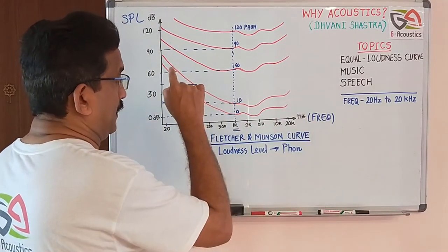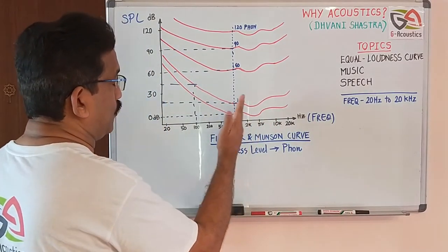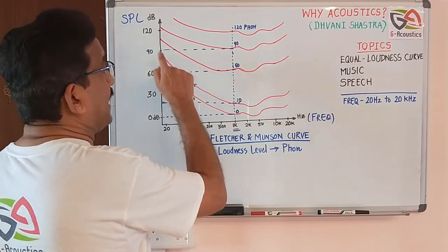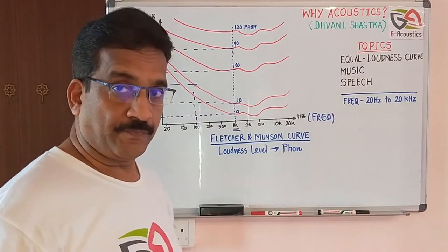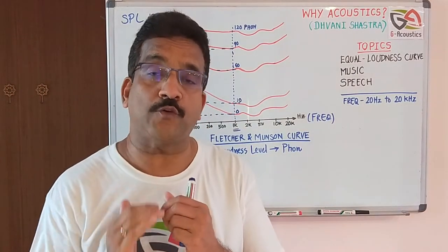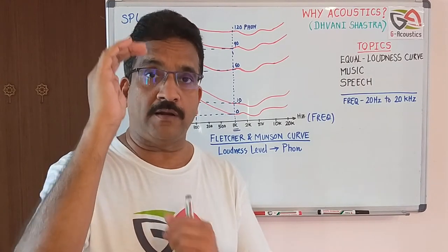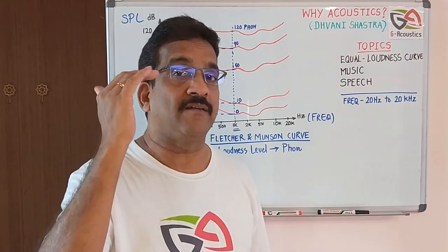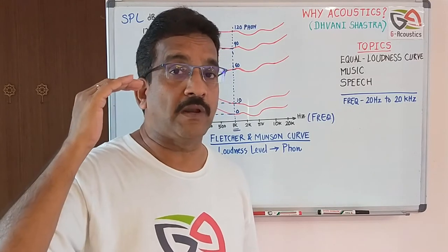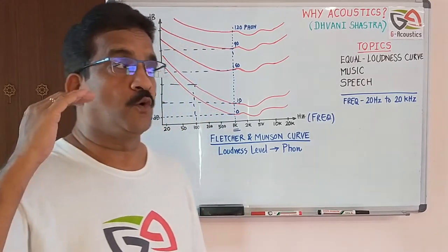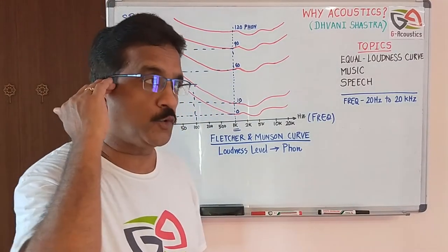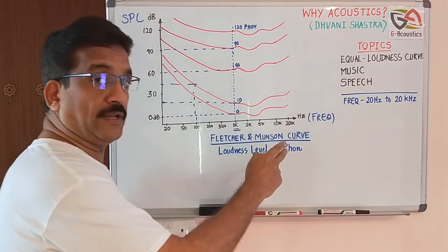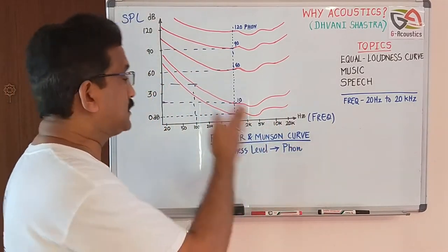You have to raise the level to 50 dB so that you can listen at the same loudness as the reference. Similarly, at 20 hertz you have to play at 80 dB — a boost of 80 dB is required so that you can listen at the same level. That is what is called equal loudness: for the human ear to perceive equal loudness, the required sound pressure level varies from frequency to frequency.